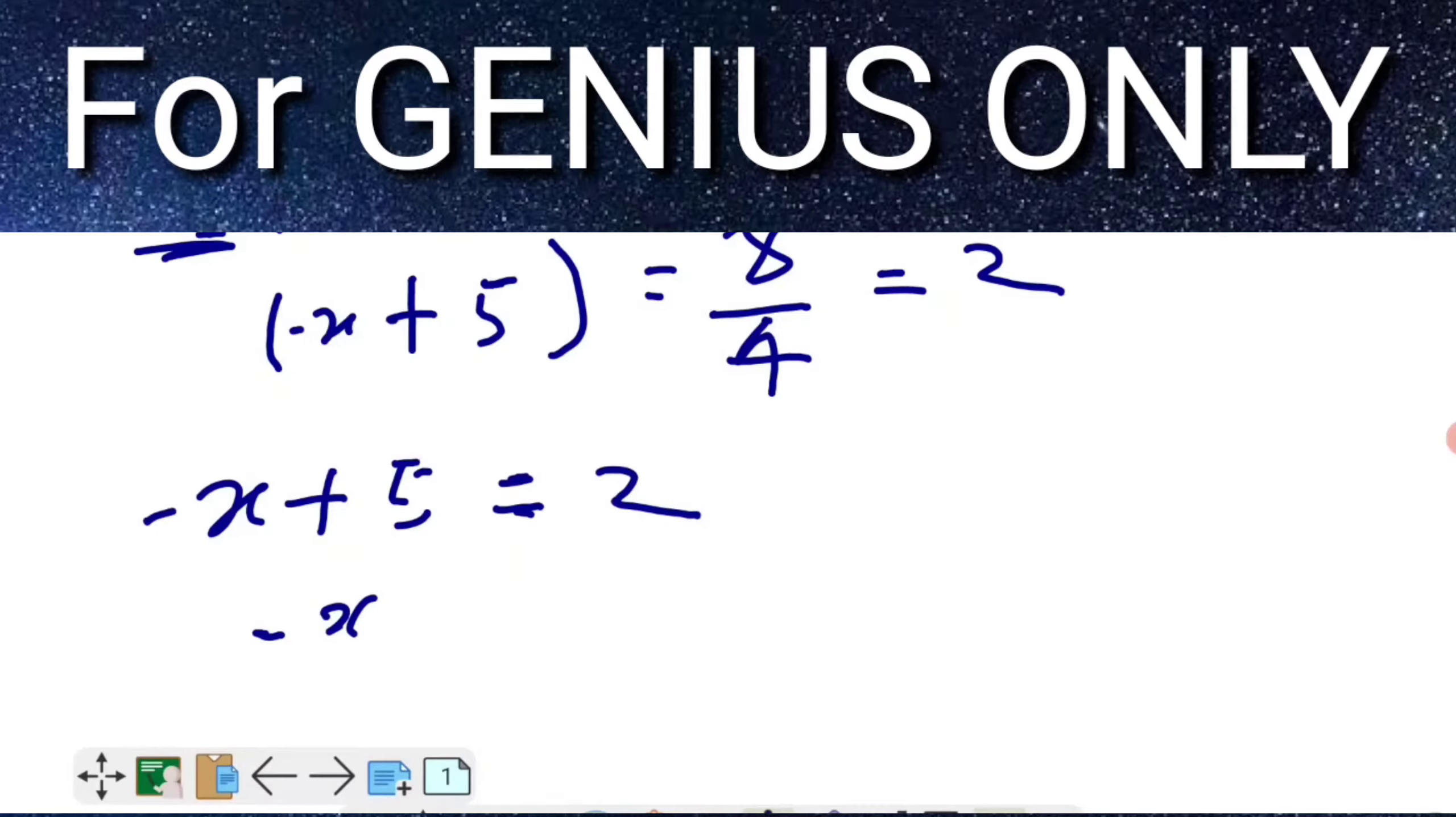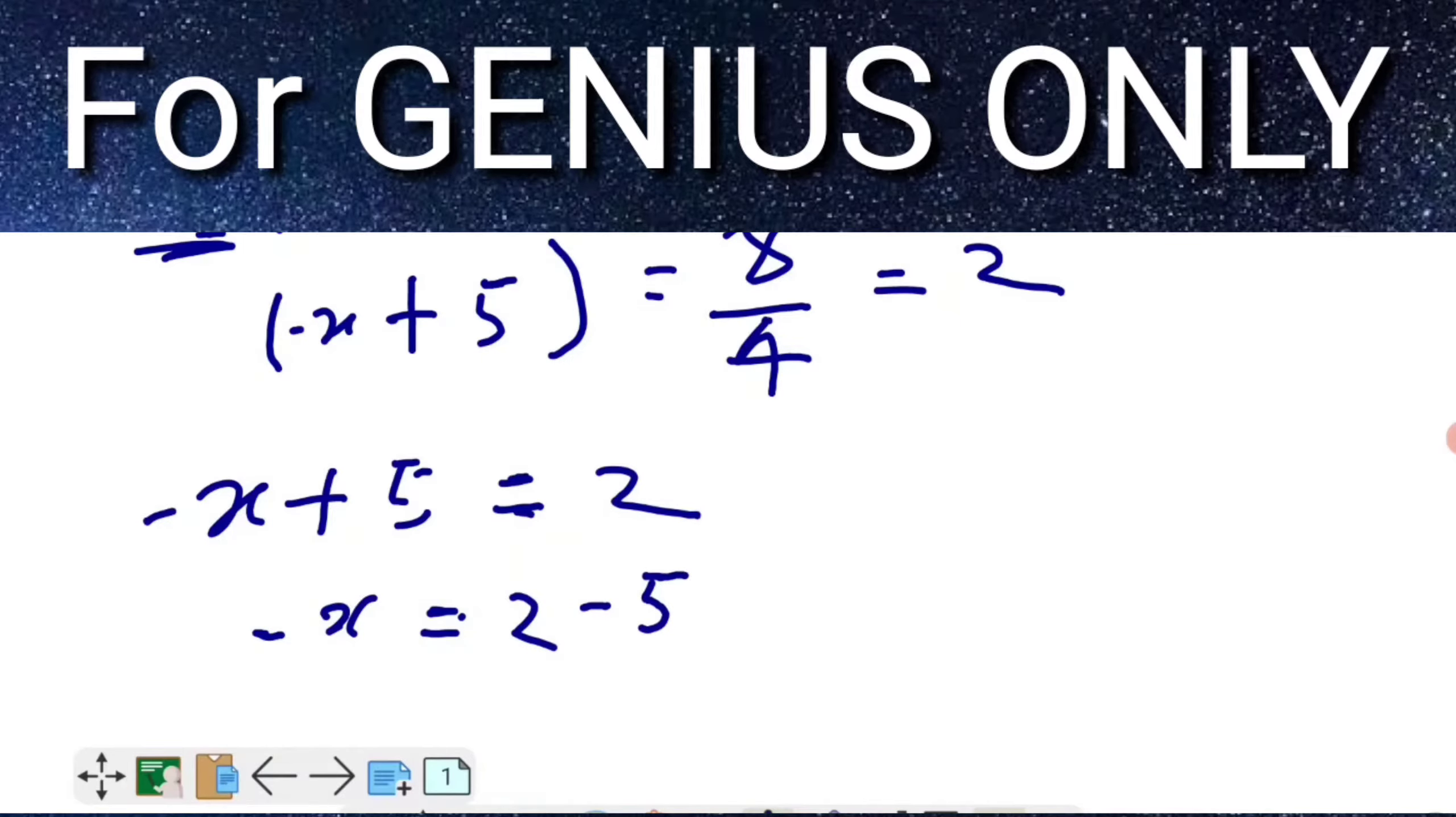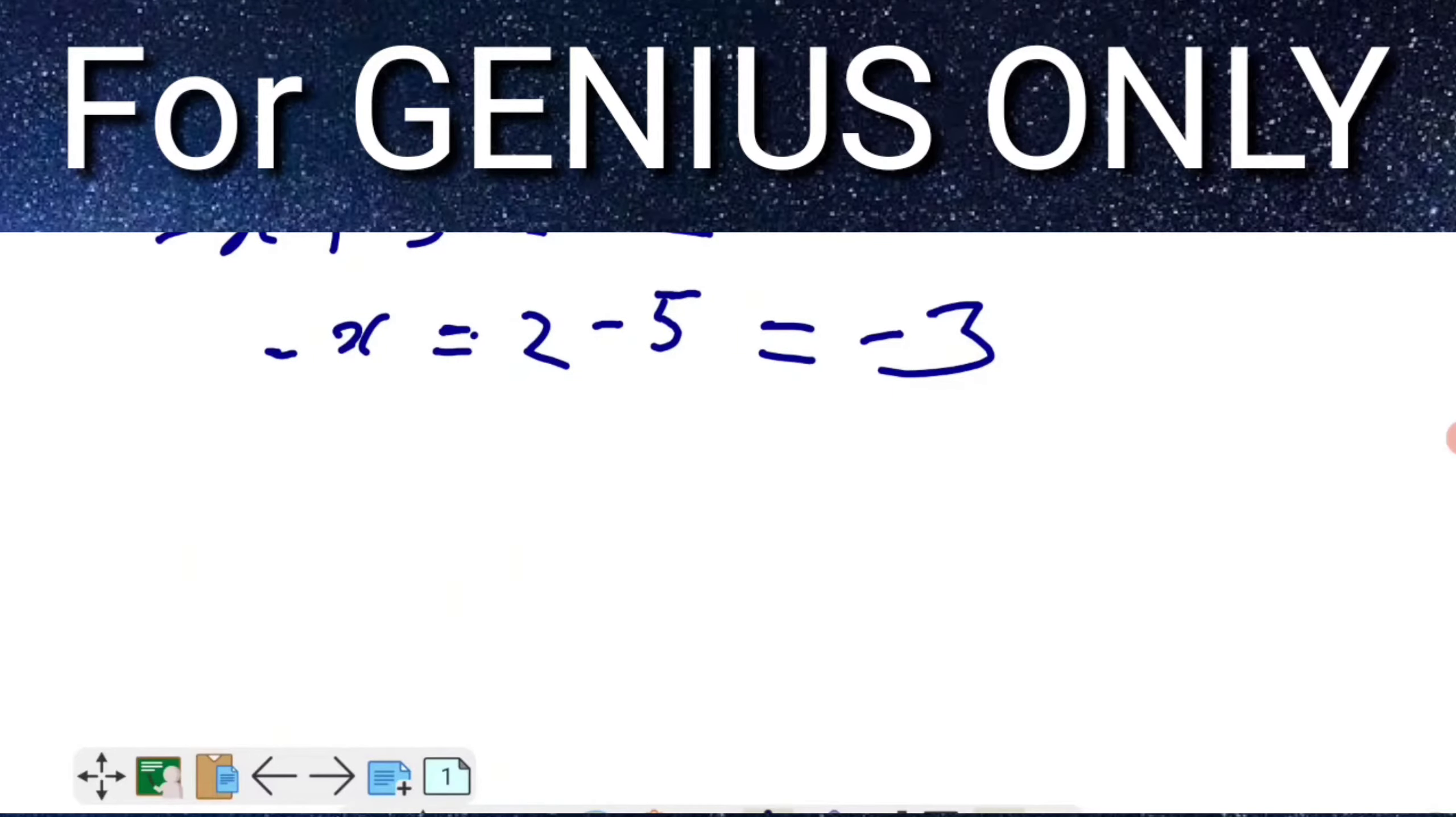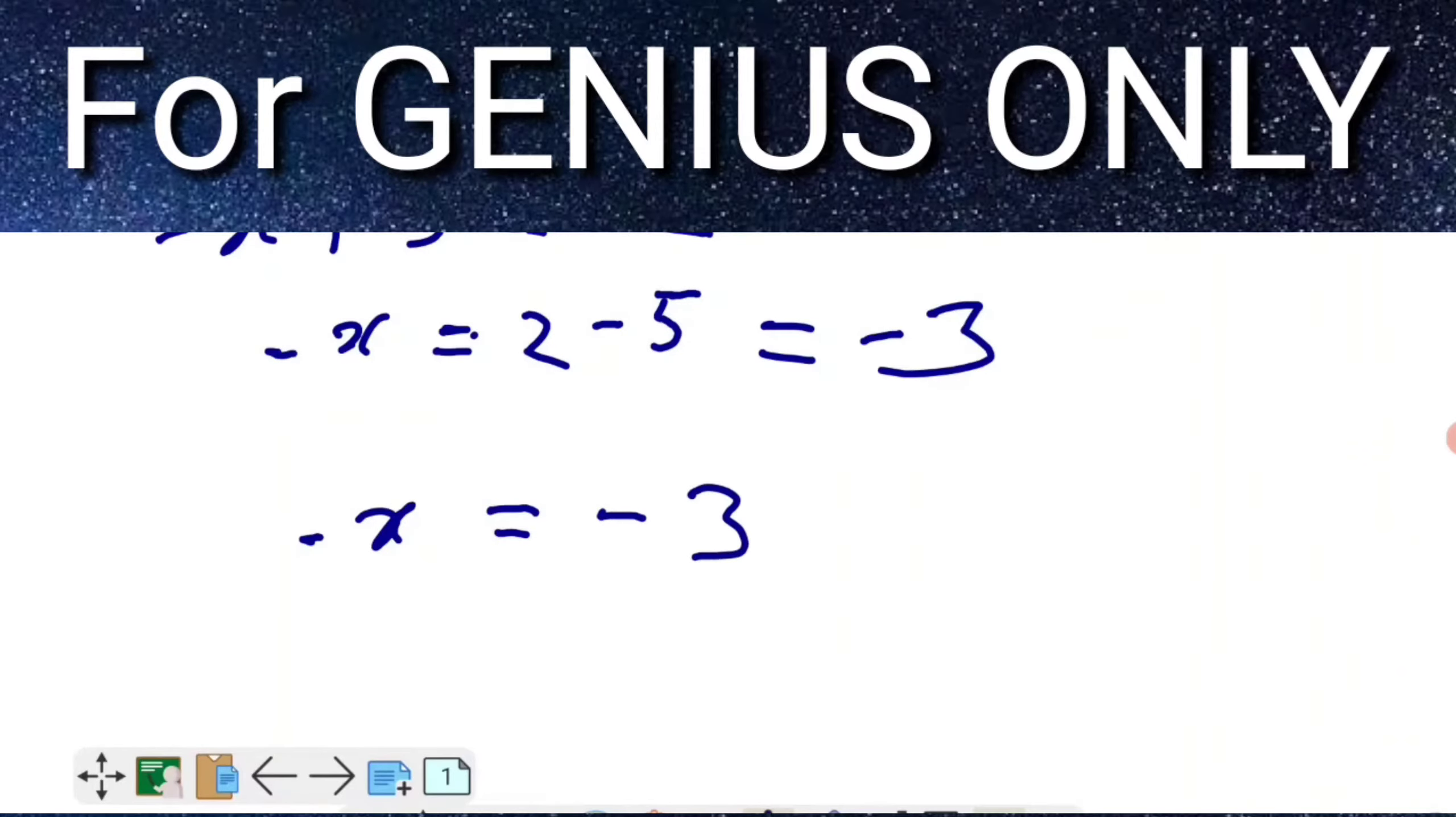When I move the 5 to the other side, it will be -x = 2 - 5 and the answer is -3.